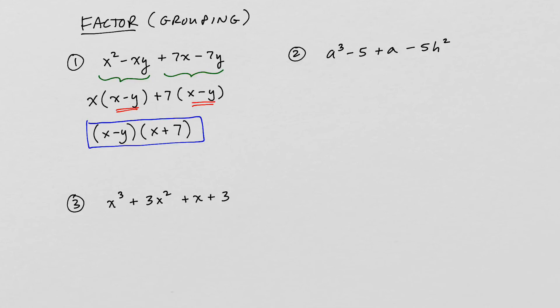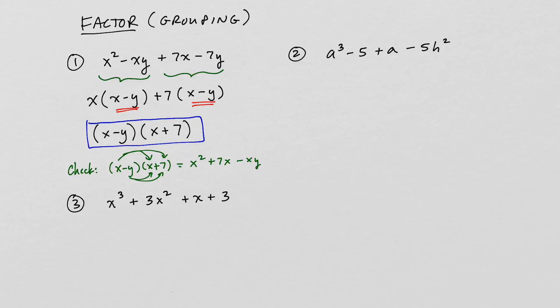If you're ever unsure whether you've factored correctly, you can always check your answer by multiplying. Taking our answer and multiplying it out: x times x is x squared, x times 7 is 7x, and combining the remaining terms. Although this may be in a different order than the original problem, you can verify it matches, confirming our answer is correct.